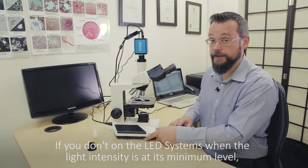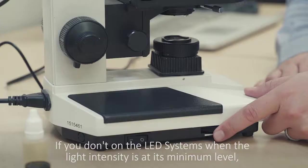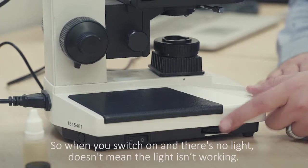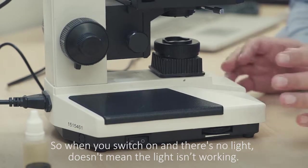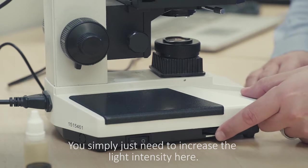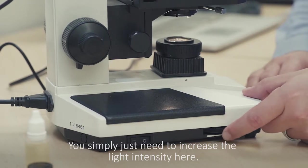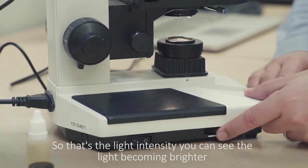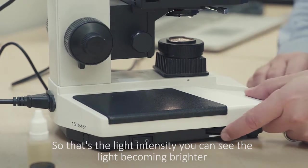If you don't see light on the LED systems, when the light intensity is at its minimum level the light will not be on. So when you switch it on and there's no light, it doesn't mean that the light isn't working. You simply just need to increase the light intensity here. You can see the light becoming brighter as it comes through the field iris diaphragm at the base of the microscope.